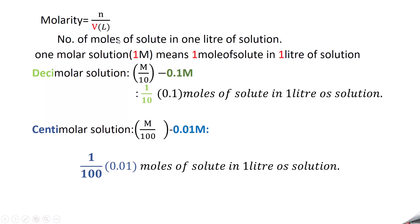Molarity is defined as the number of moles of solute in one liter of the solution. Mathematically it is written as N by V in liters. A 1M solution means 1 mole of solute is taken in 1 liter — we call it a 1 molar solution. Decimolar solution means 1/10 mole of solute in 1 liter, giving 0.1M.